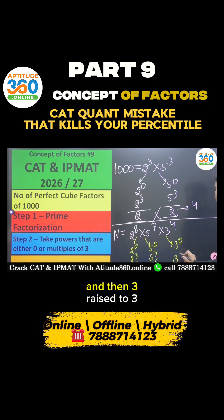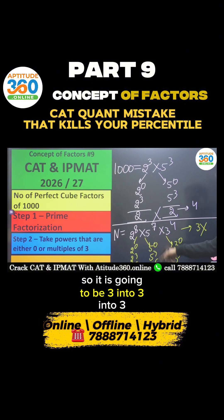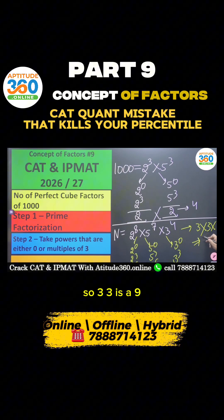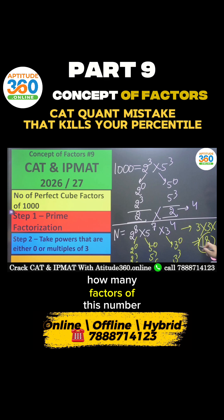Here it is going to be 3 raised to 0 and then 3 raised to 3. So it is going to be 3 into 3 into 2, so 3 times 3 is 9, total 18.